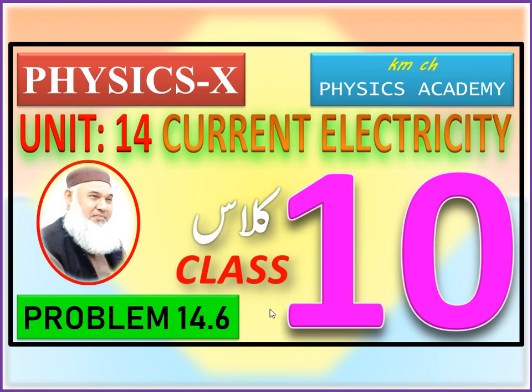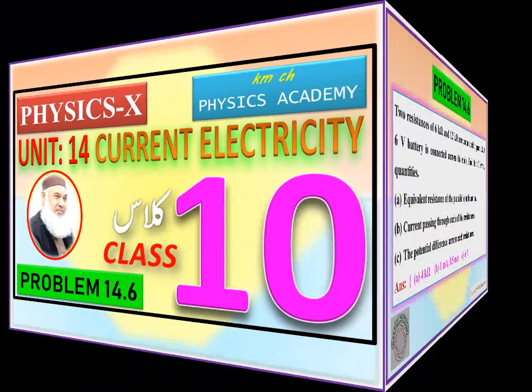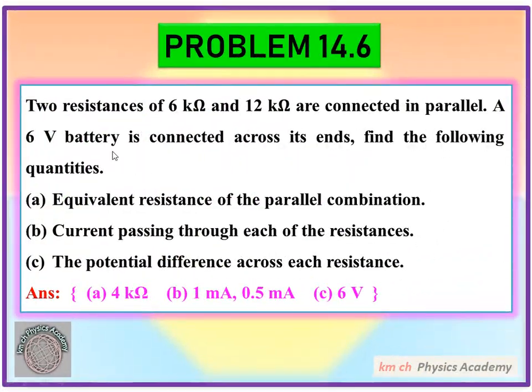Let us see the statement of Problem No. 14.6. Two resistances of 6 Kilo Ohm and 12 Kilo Ohm are connected in parallel. A 6V battery is connected across its ends. Find the following quantities.